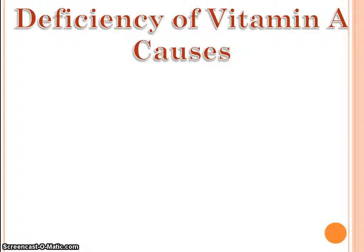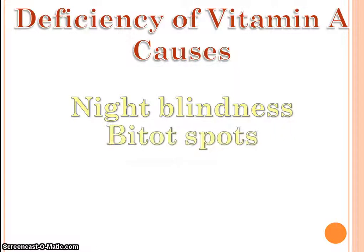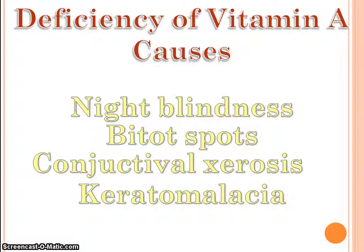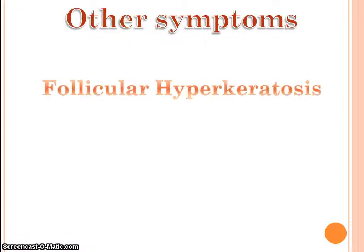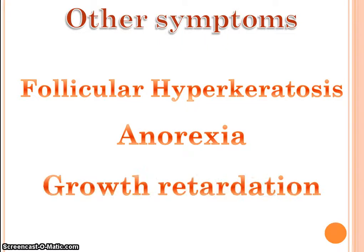Deficiency of vitamin A causes night blindness, Bitot's spots, conjunctival xerosis, and keratomalacia, all causing a decrease in vision. Other symptoms of vitamin A deficiency include follicular hyperkeratosis, anorexia, and growth retardation.